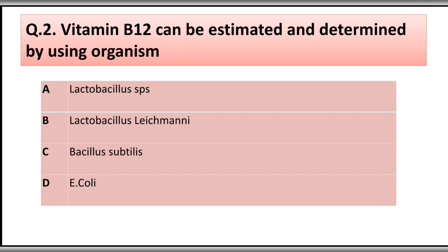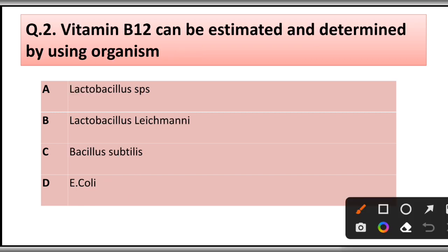Question number two: Vitamin B12 can be estimated and determined by using which organism? A) Lactobacillus species, B) Lactobacillus lesmone, C) Bacillus subtilis, D) E. coli. The correct answer is option B, Lactobacillus lesmone.